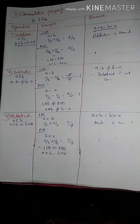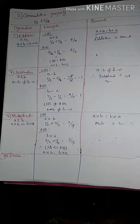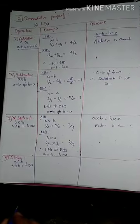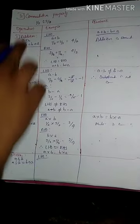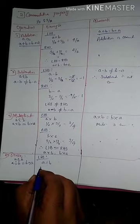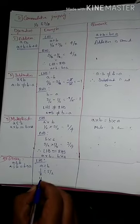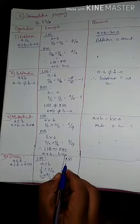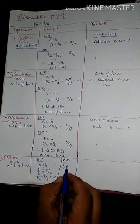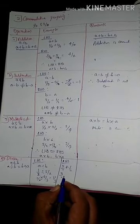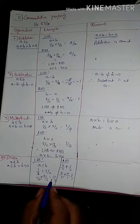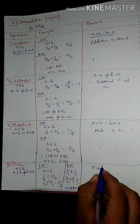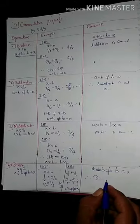For division, for any two rational numbers A and B, A divided by B is not equal to B divided by A. Taking A as 1/2 and B as 3/2: LHS is 1/2 divided by 3/2, which equals 1/2 into 2/3 equals 1/3. RHS is 3/2 divided by 1/2, which equals 3/2 into 2/1 equals 3. Since 1/3 is not equal to 3, LHS is not equal to RHS. Therefore, division is not commutative.